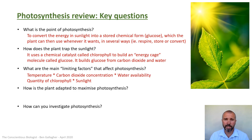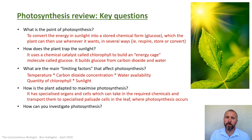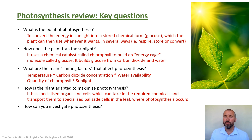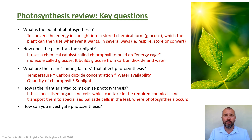We've now come full circle back to our key questions and can fill in the final two. How is the plant adapted to maximize photosynthesis? Briefly: it has specialized organs and cells that can take in the required chemicals — carbon dioxide and water — and transport them to specialized palisade cells in the leaf where photosynthesis occurs. But as I've said many times, pile in as much detail as possible — the more detail you give, the better your marks.